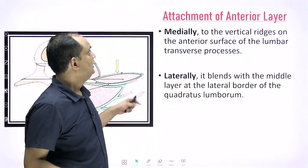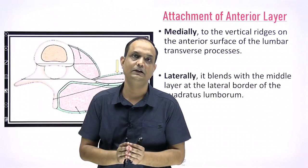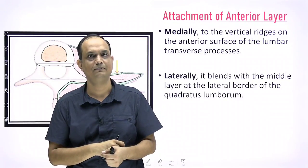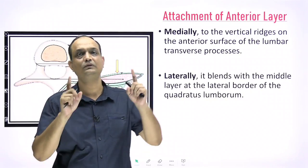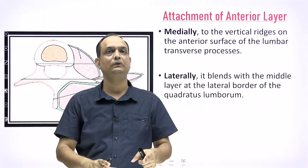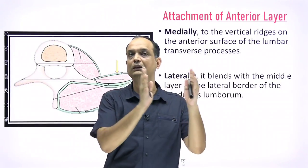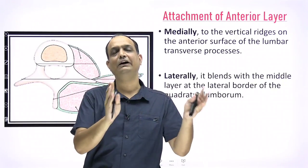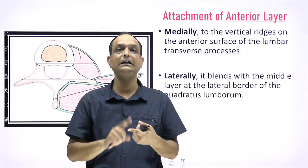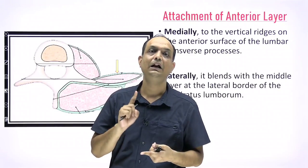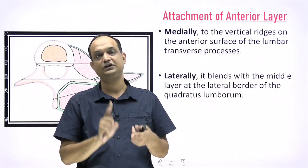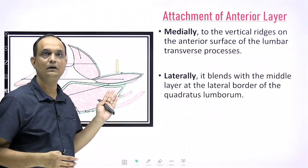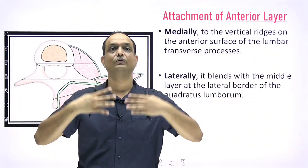When writing a short note on the thoracolumbar fascia in an exam, you should cover: what it is, its layers, and its extent. Then write about each layer separately — anterior, middle, and posterior. For the anterior layer, the most important point is that its upper part forms the lateral arcuate ligament. Then describe the attachments using two orientations: transverse section and vertical orientation.